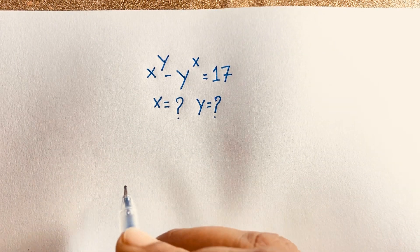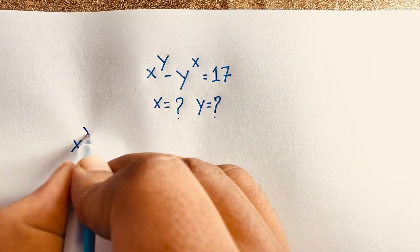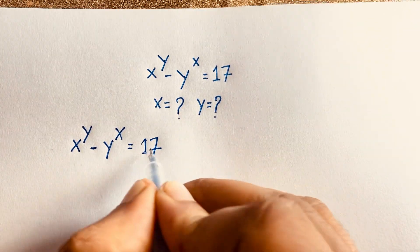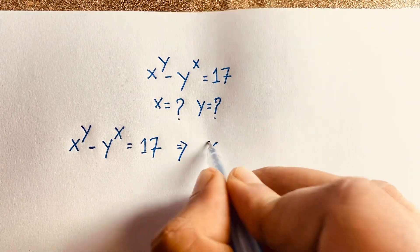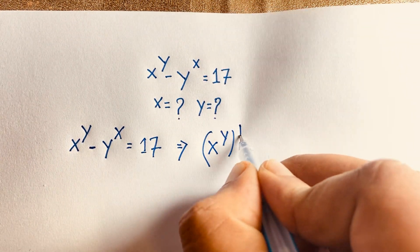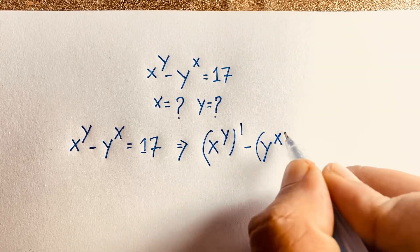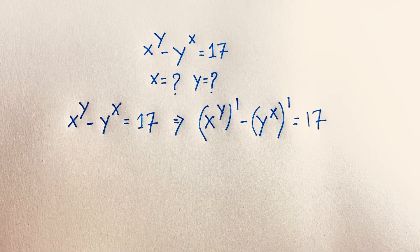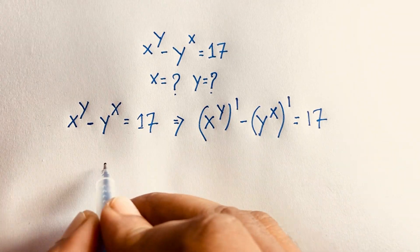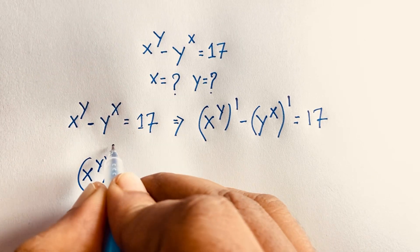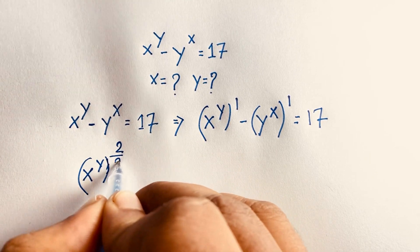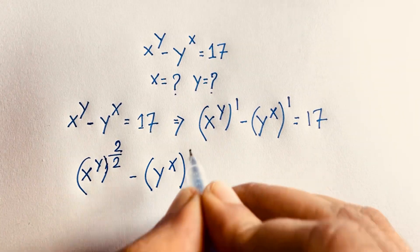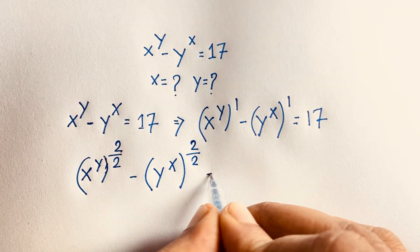I can write out our question: x to the power y minus y to the power x is equal to 17. I can rewrite this expression as x to the power y, whole to the power 1, minus y to the power x, whole to the power 1, is equal to 17. Now, for the exponent 1, I can write it as 2 over 2. So 2 over 2 is also 1, and the same applies to the other term: y to the power x, bracket, to the power 2 over 2, is equal to 17.